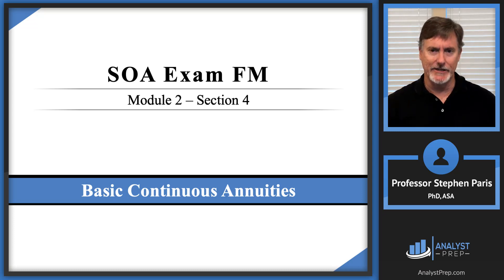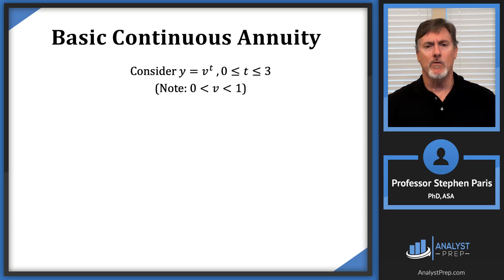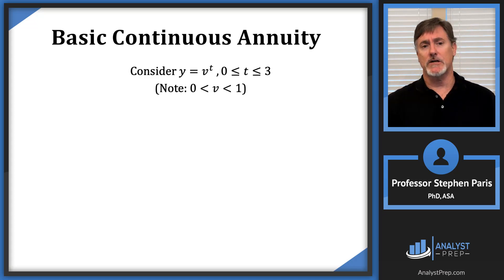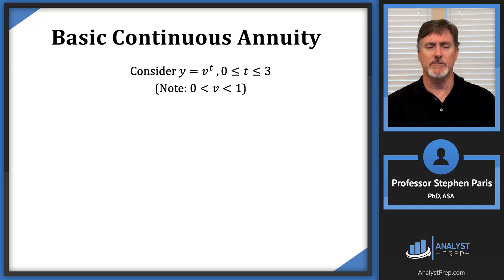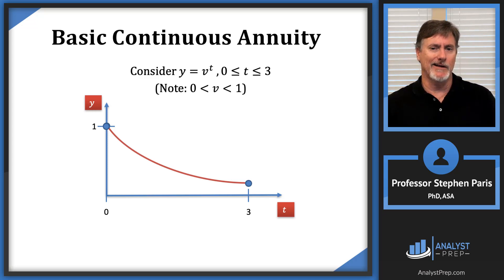In this video we're going to look at basic continuous annuities. Let's consider the equation y = v^t where t is between 0 and 3, thinking of t as being measured in years — so a three-year period. The v represents the annual discount factor, a value between 0 and 1. I'm going to come at this from a geometric standpoint and then tie it back into the FM stuff.